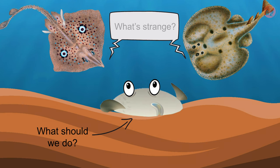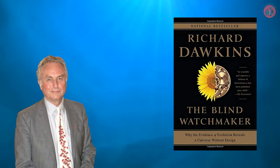Why didn't they evolve to have a body that spread out on both sides, like rays? Evolutionary biologist Richard Dawkins discusses this in his book, The Blind Watchmaker.